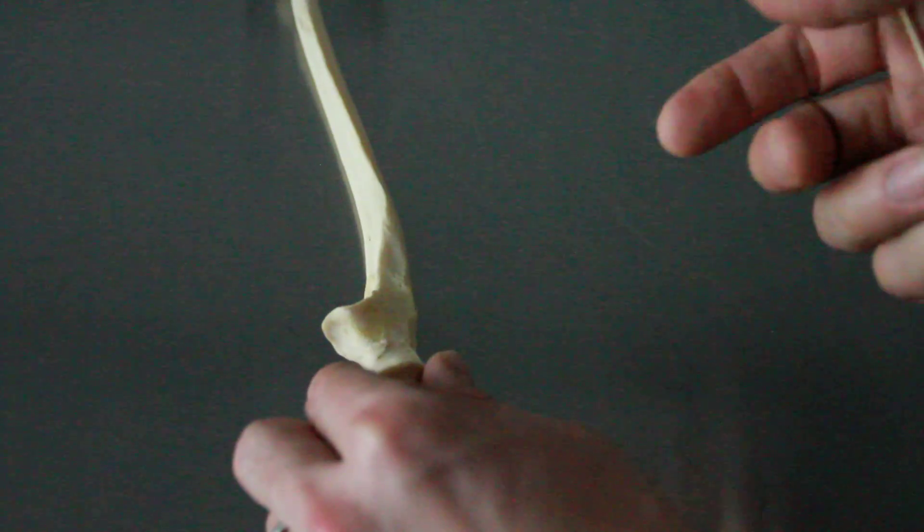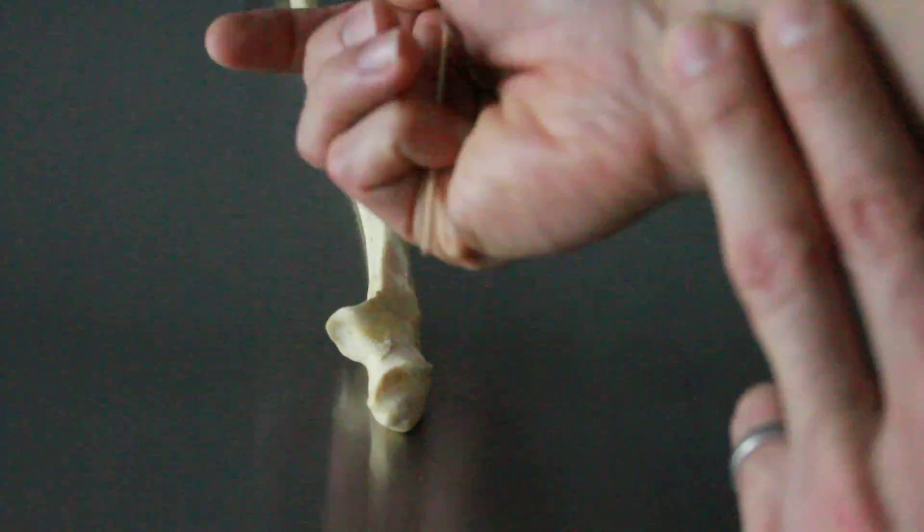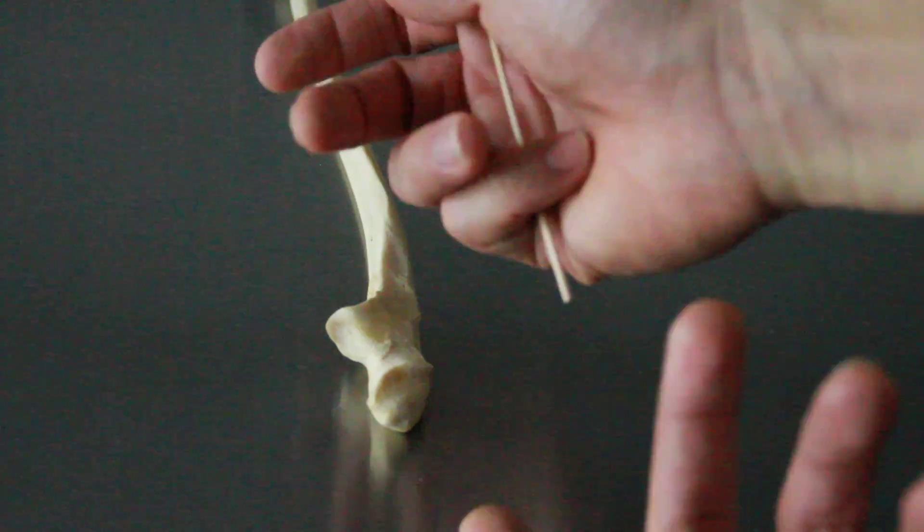That's one of the things you have to remember because radial artery is thumb side, lateral. Ulnar artery is pinky side, medial.